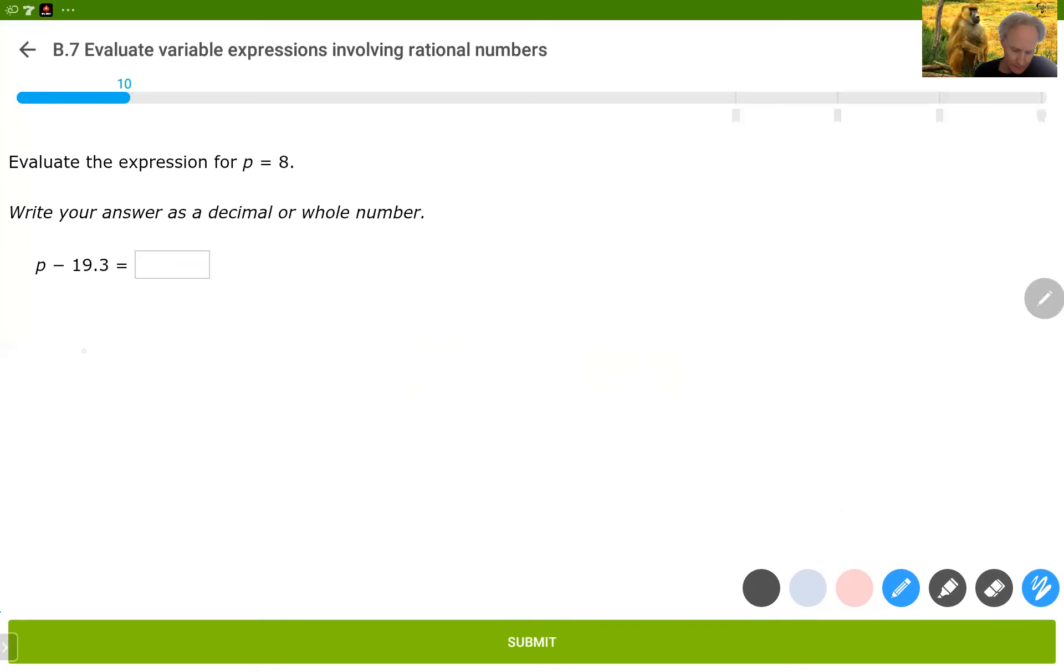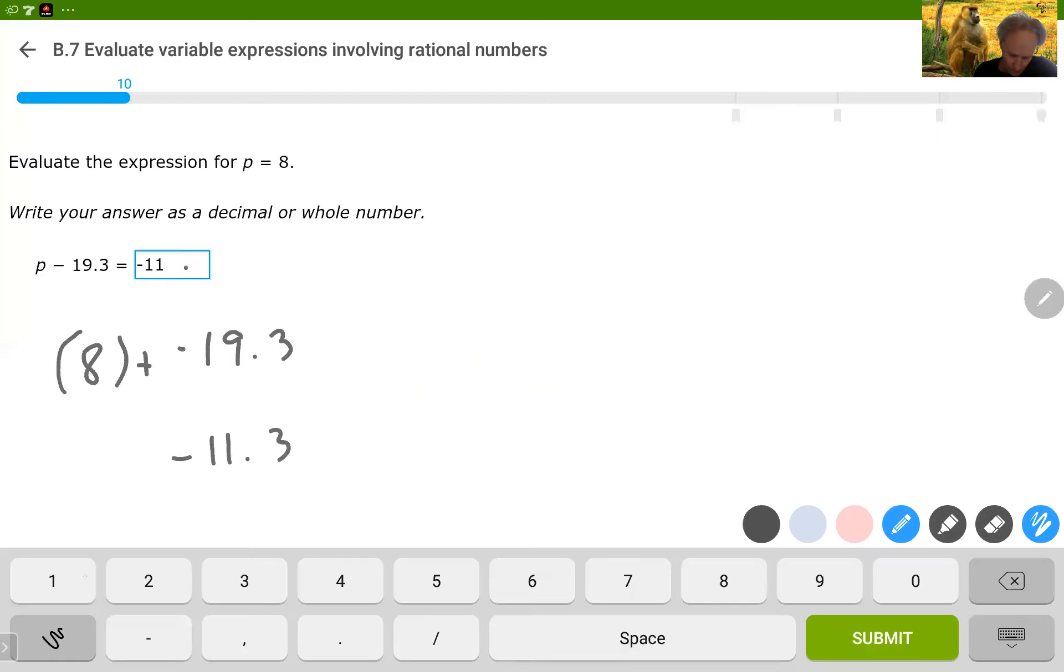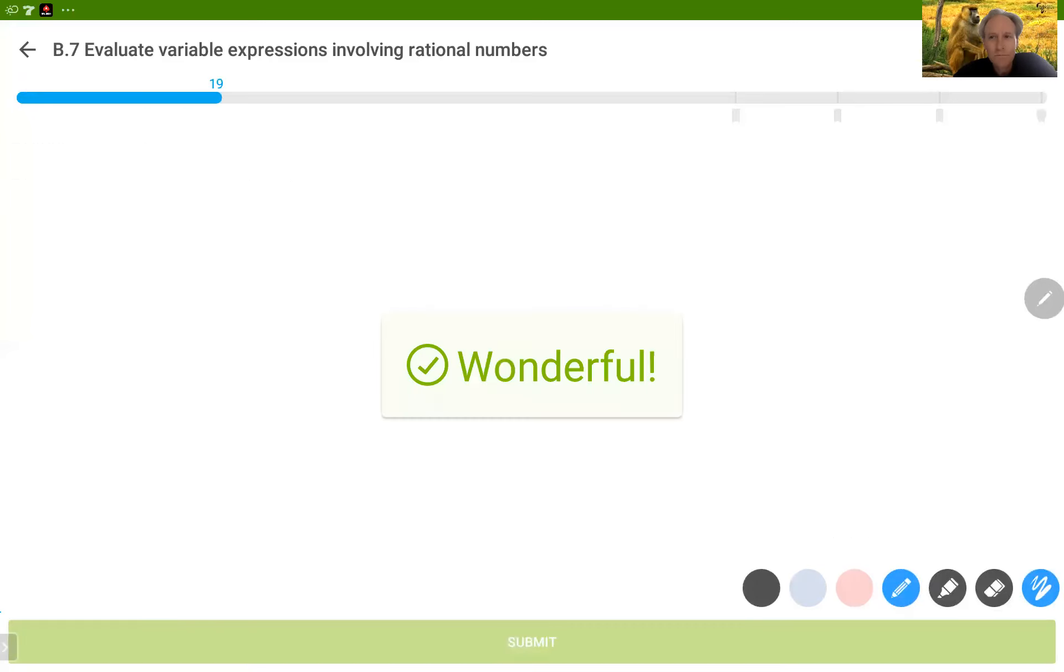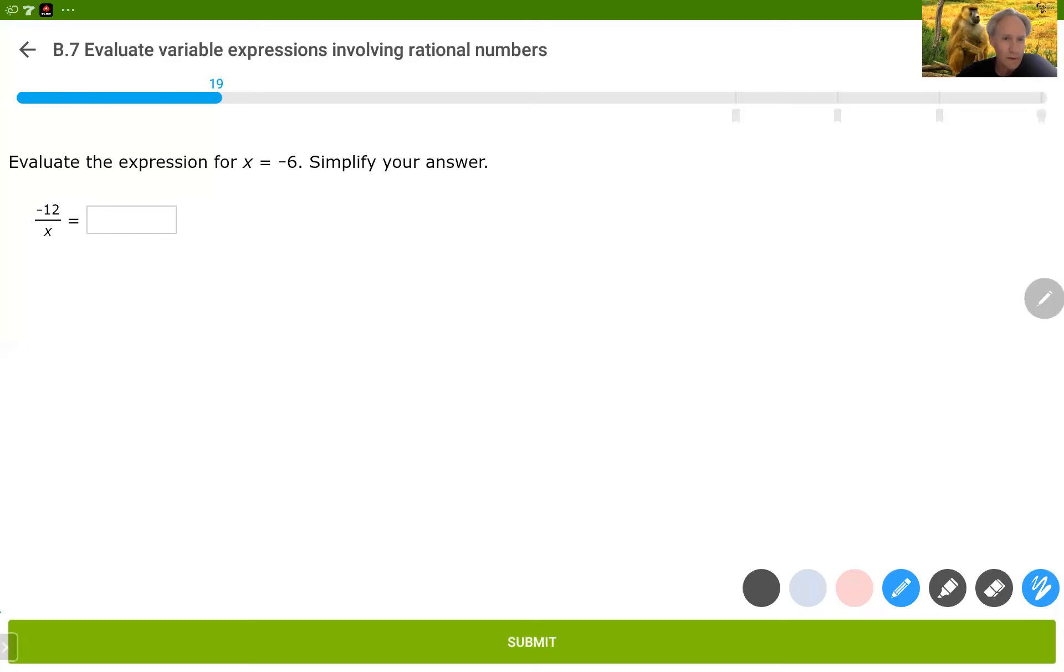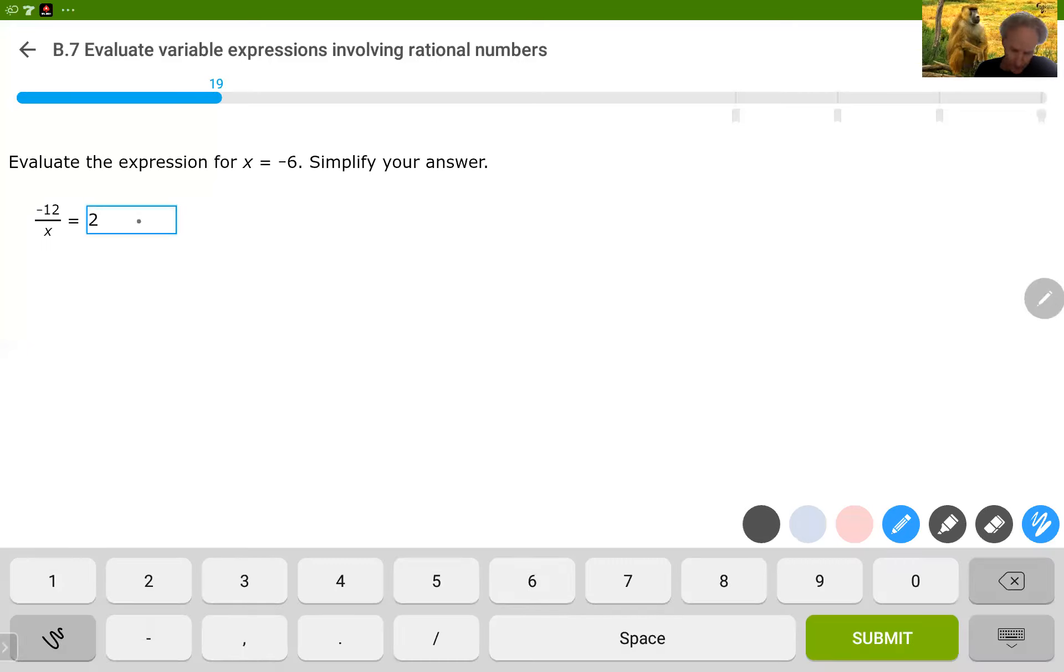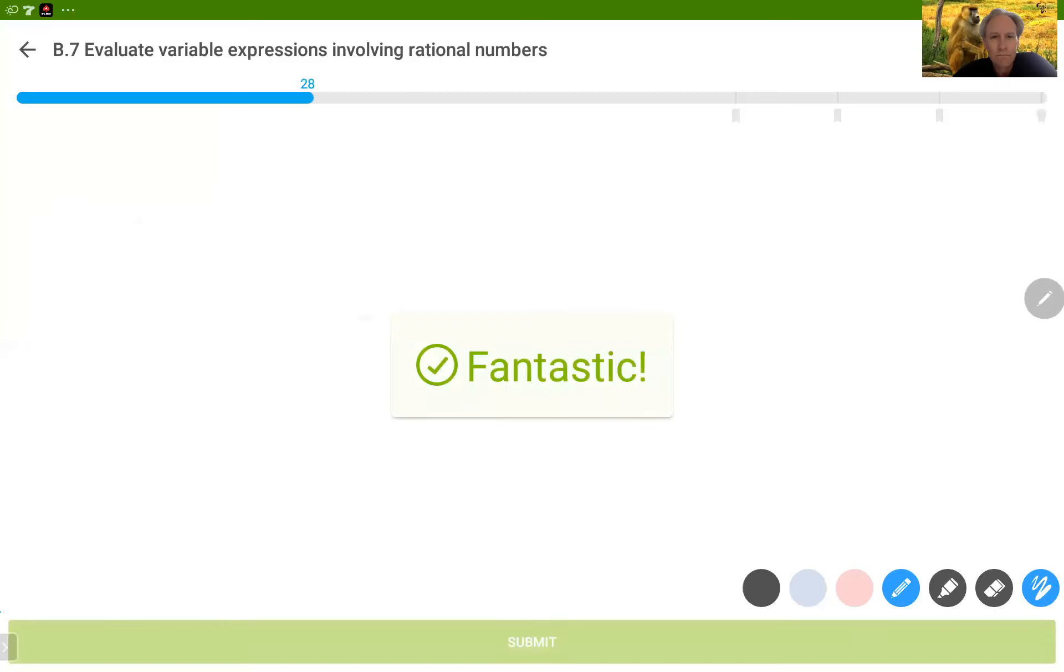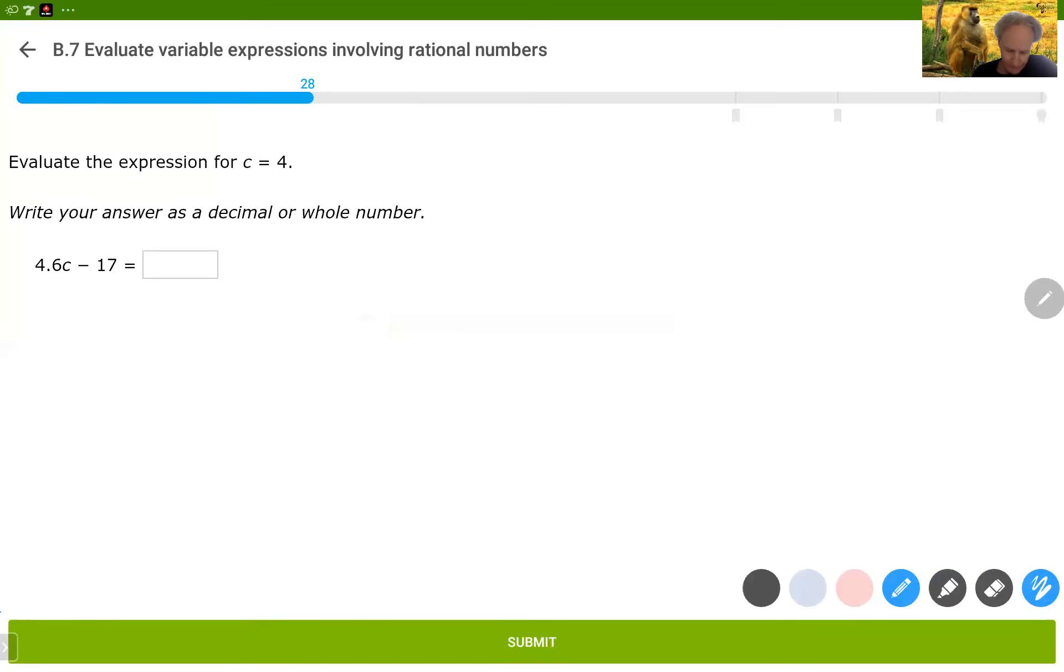Okay, we've got 8 plus in parentheses negative 19.3 which is negative 11.3. Negative 12 divided by negative 6 is 2, positive 2. That is negative 12 divided by negative 6. 4.6 times 4. Sorry, that's what we're looking for there. Plus negative 17.